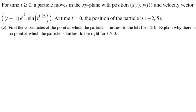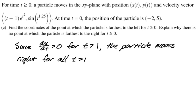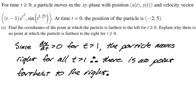All right. Find the coordinates of the point at which the particle is farthest. Oh, yeah, sorry, we did that. Explain why there is no point at which the particle is farthest to the right. Well, we already know that dx dt is greater than 0 when t is greater than 1. And if dx dt is greater than 0, the particle is always moving to the right when t is greater than 1. And if you're always moving to the right, there is no farthest right point. You will just keep going forever.